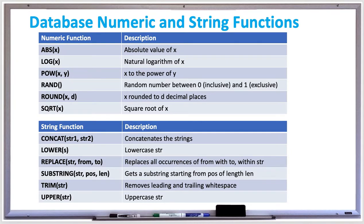Let's go over some of the database numeric and string functions, and also we'll talk about some of the database date and time functions. There are a lot of numeric functions you can use in your SQL statements: abs for the absolute value of x, log for the natural logarithm of x, pow for x to the power of y, rand for a random number between 0 (inclusive) and 1 (exclusive), round which rounds x to d decimal places, and sqrt which is the square root of x.